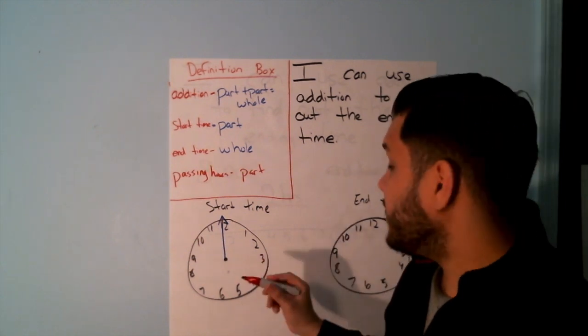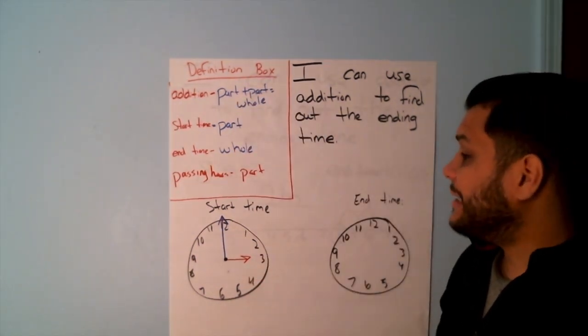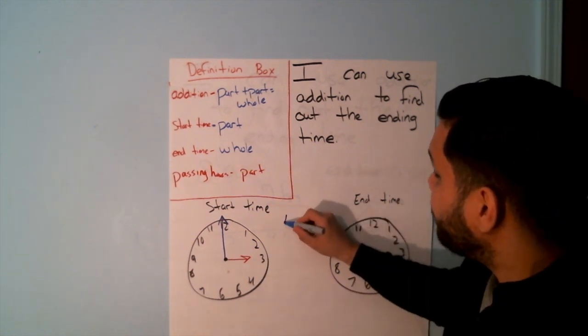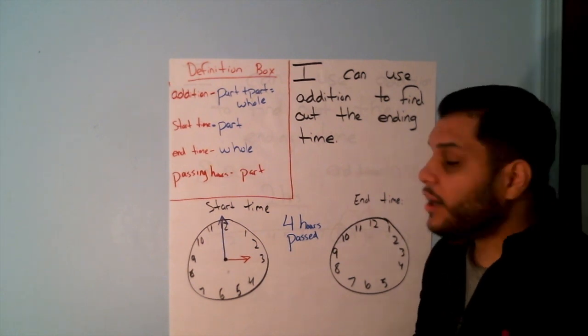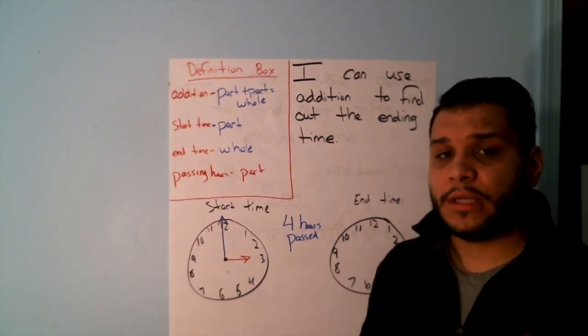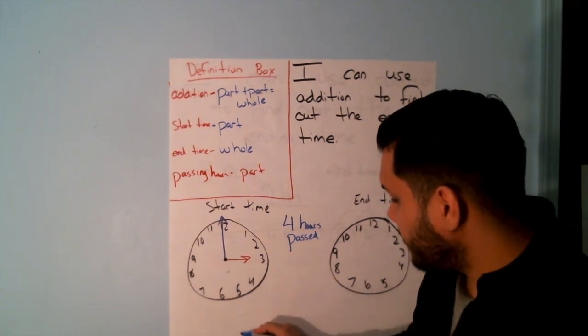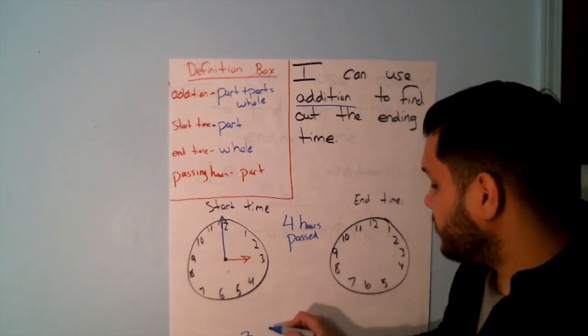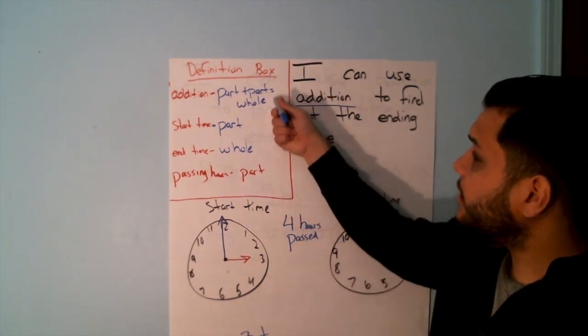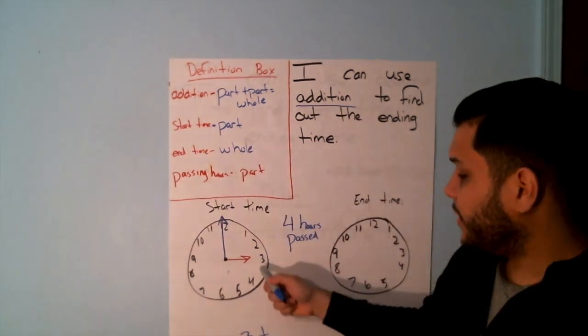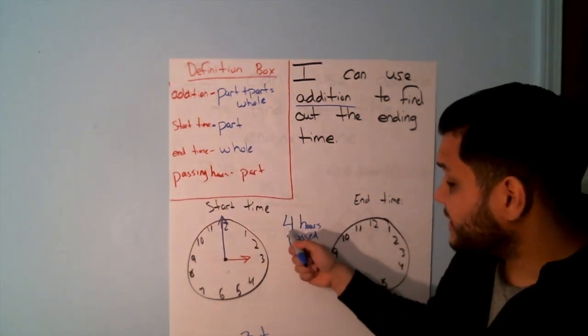I'm going to start off with 3 o'clock. So we have our start time. That's one of our parts. Our start time is 3 o'clock. I'm going to say that four hours have passed. So if four hours passed, how would I solve this? I know that I can use the number line. But how else can I solve this? Well, I know that I have the number 3. Because we said that today we're using addition, I'm going to put my plus sign there. But then how would I figure out what is my second part? Well, if I look in my definition box, I see that my start time is the part. I have that. But where else do I see part? Oh, the passing hour. So that means that this number will be my second addend.